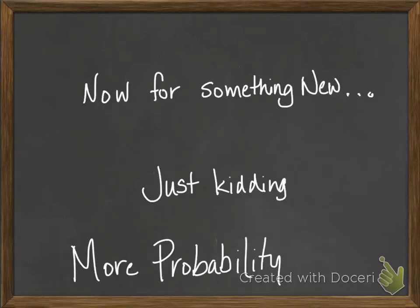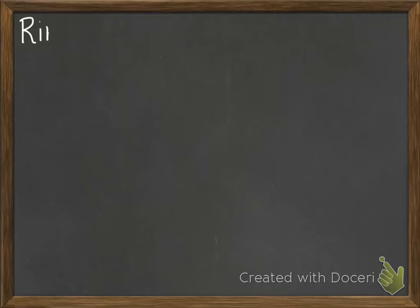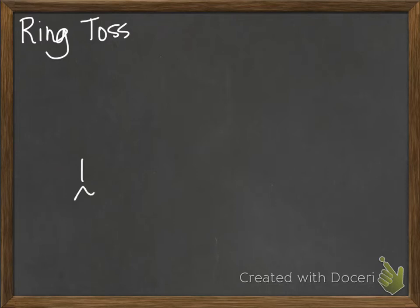We're going to continue with probability and talk about games. Normally this time of year we'd be preparing for our carnival games project, but it's going to be a little different this year. We're going to talk about games and a shortcut. Let's say you're doing a ring toss — something that has two possibilities, like hit or miss, or making a basket or not. You've got two options.